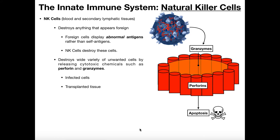Welcome back to Anatomy & Physiology on Catalyst University. In this video we're going to be talking about another kind of white blood cell that's part of the innate immune system, and these are what we call natural killer cells.